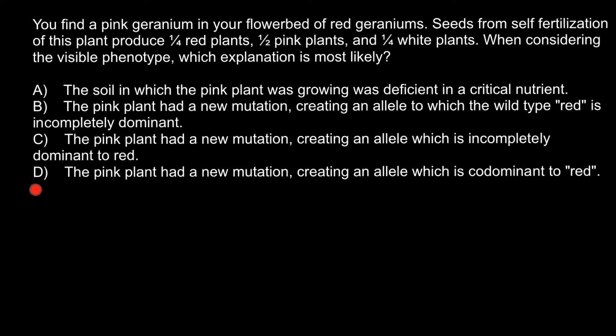There are four different explanations. Explanation A: the soil in which the pink plant was growing was deficient in a critical nutrient. This could be an explanation if we were considering plant physiology, but we are talking about plant genetics, so this is not the explanation in our case today.